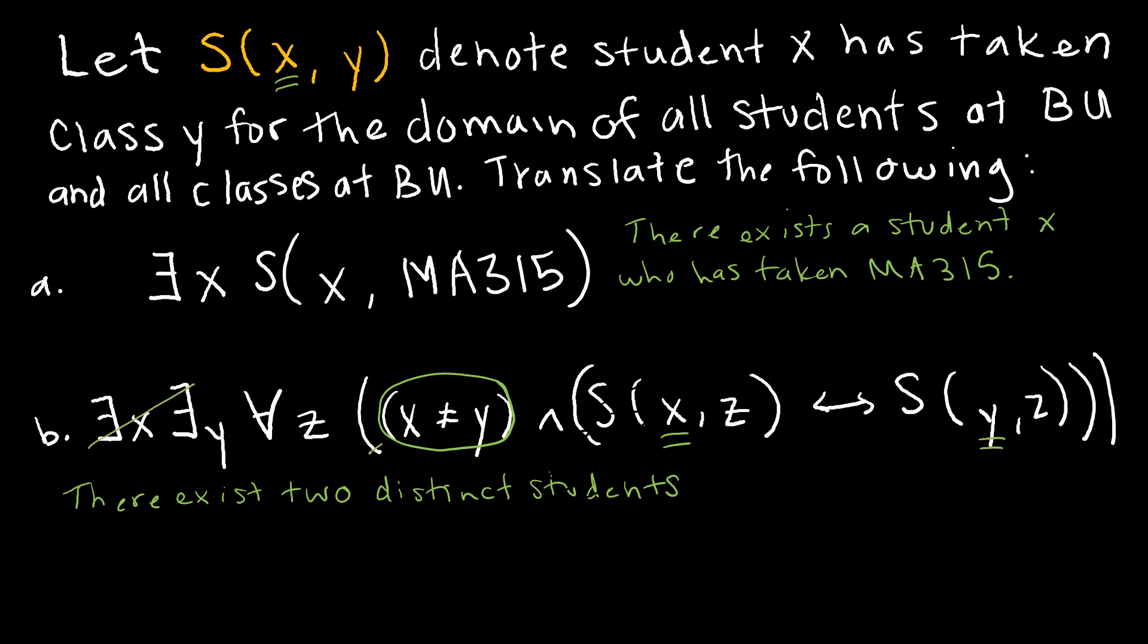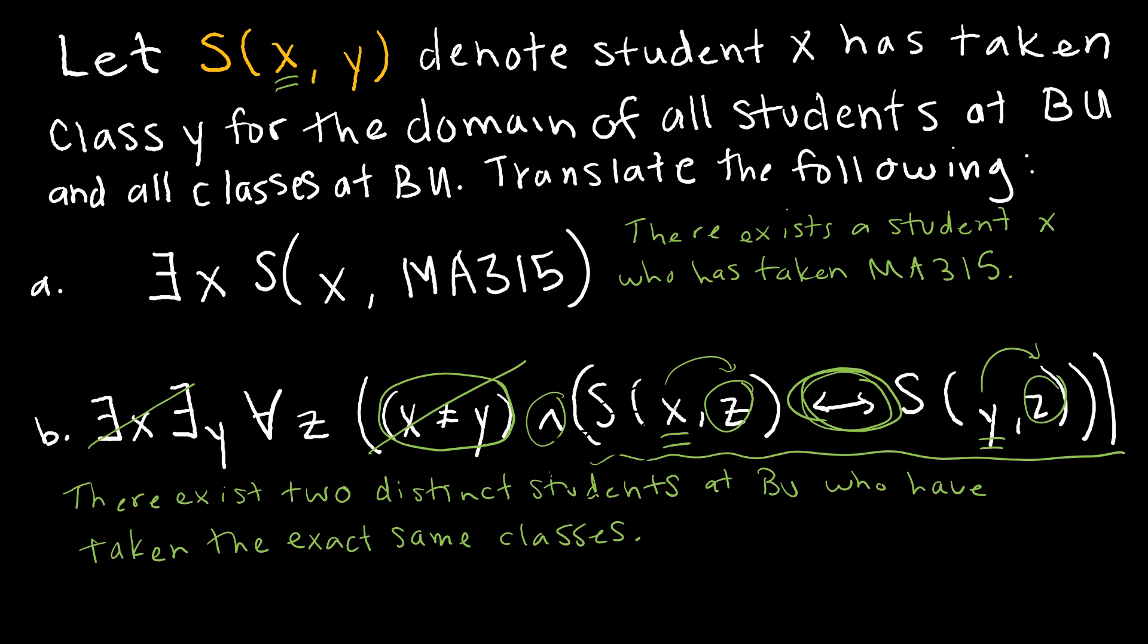So I've gotten through there exists. I've gotten through, hey, they're not the same person. And now what does all of this business mean? Well, we can assume that z is some class, right? So any class at BU. And we're saying that student x is registered for class z or has taken class z. And student y has taken class z. And this one's if and only if. So I could write it out in a longer sentence and then shorten it down. But I'm just going to go straight for the gold. So there exist two distinct students at BU who have taken the exact same classes. Because essentially what I'm saying here is x will only take it or x has only taken it if y has taken it and y has only taken it if x has taken it, which means they have to have only taken the exact same class.